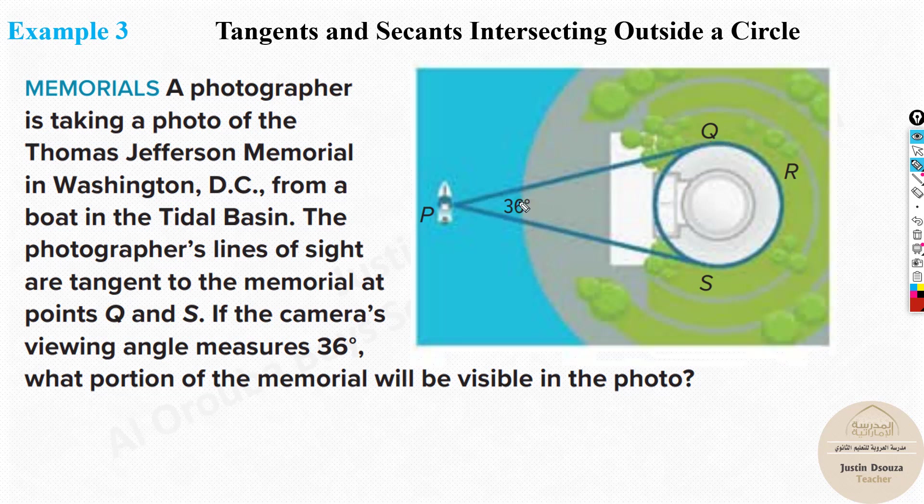Now, these are two tangents which are intersecting outside the circle. So now, if the camera viewing angle is already given, this is given as 36, what portion of the memorial will be visible in the photo? What portion? See, now this portion will be visible, right? But we will do it as percentage and tell. But first, we need to find this.